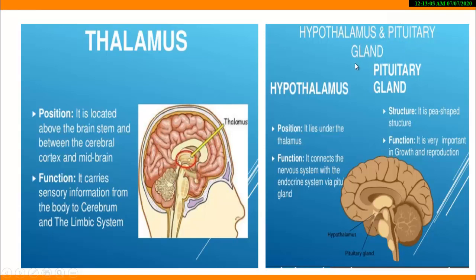The hypothalamus and pituitary gland are also part of the forebrain. The hypothalamus is located beneath the thalamus. Its function is to connect the nervous system with the endocrine system via the pituitary gland. It is very important in growth and reproduction, and it also produces various types of hormones that function in the operation of different glands.